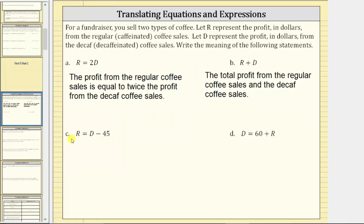For part C we have R equals D minus 45. We can express the meaning as the profit from the regular coffee sales is equal to the profit from the decaf coffee sales minus 45, which we assume will be dollars.